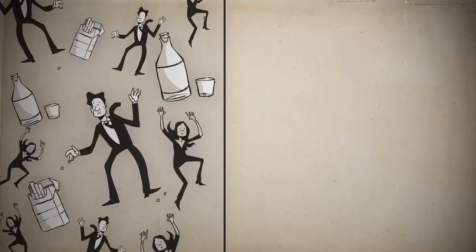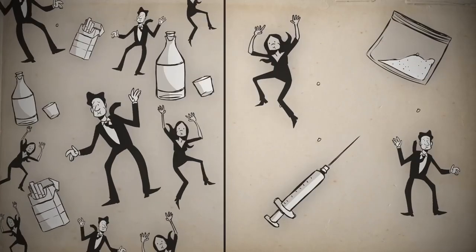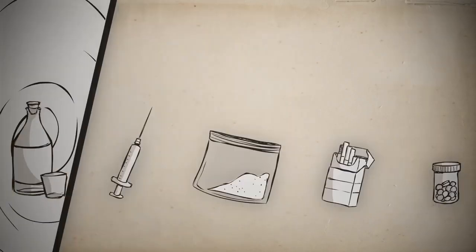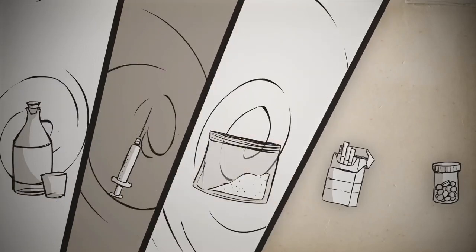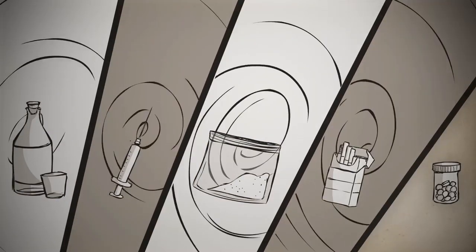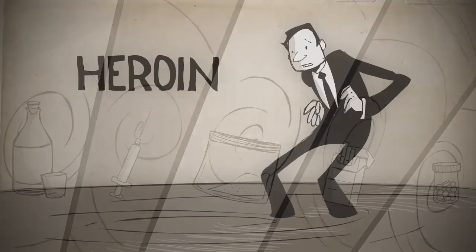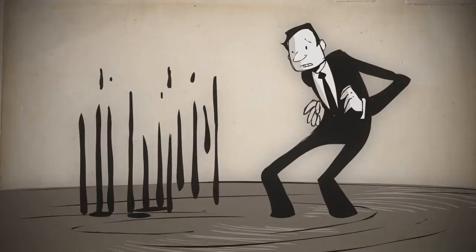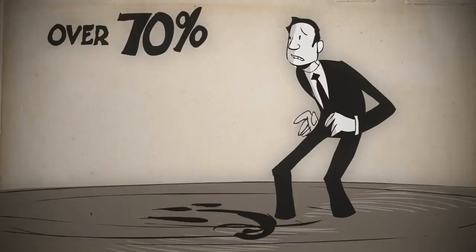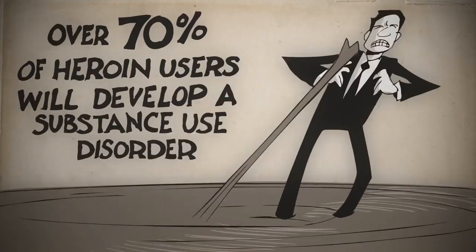Far more people get into the pool with alcohol and tobacco than with heroin or cocaine. Each substance has different risk levels for developing a substance use disorder, like whirlpools swirling at vastly different speeds. The heroin pool, for example, is a powerful force — over 70% of heroin users will develop a substance use disorder.